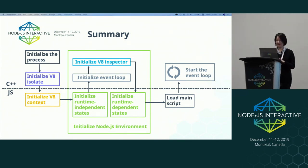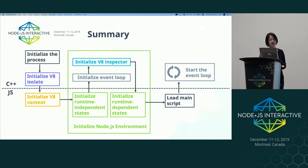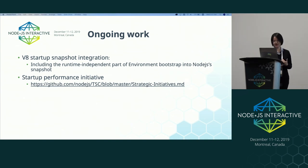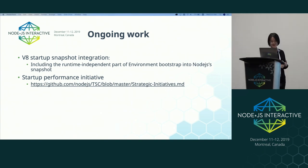To summarize: to initialize a Node process from scratch, we first run per-process setups, then set up a V8 isolate, a V8 context, and a Node environment. The majority of the work is done in the environment setup, which includes initializing the runtime-independent states, the event loop, the V8 inspector, and handling runtime-dependent configurations. We then select and execute the main script and start the event loop. We now have integrated the V8 startup snapshot into Node, but at the moment the snapshot only includes the context setup. We're currently working on including the runtime-independent part of the environment bootstrap into the startup snapshot to speed up the bootstrap further — this is the current focus of the Startup Performance Initiative. Thank you.